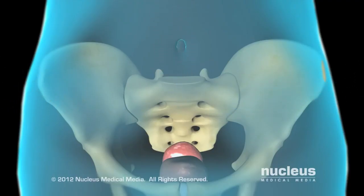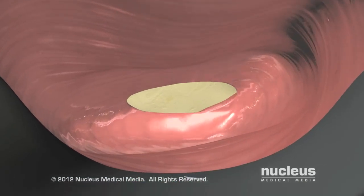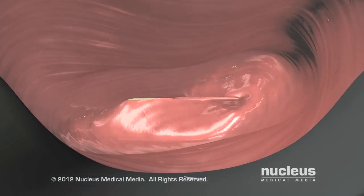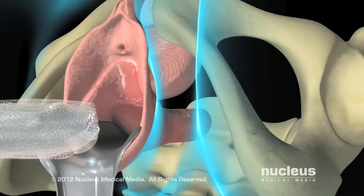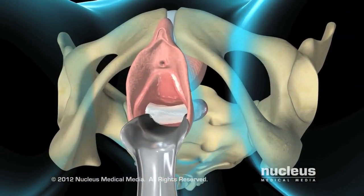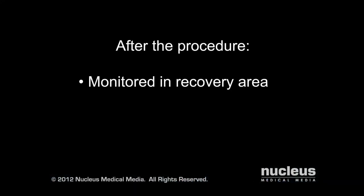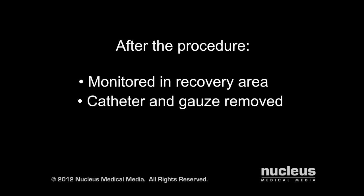Finally, your surgeon will close the incisions on your abdomen with stitches. In all three hysterectomy procedures, the top of the vagina is stitched closed and gauze packing is placed in the vagina to prevent excess bleeding. After your surgery, you'll be taken to the recovery area for monitoring. The catheter and the gauze packing will be removed before you leave the hospital.